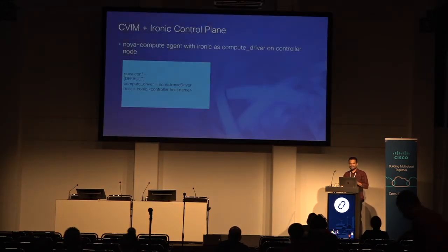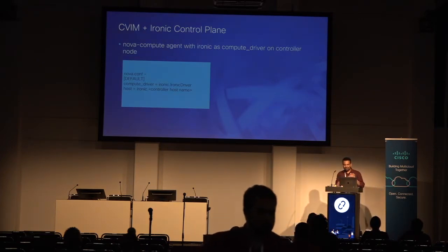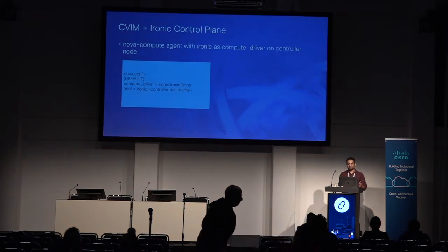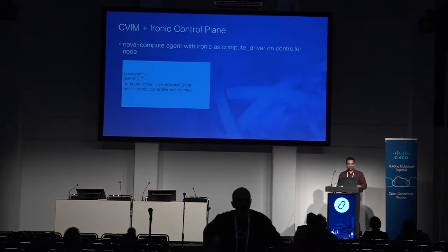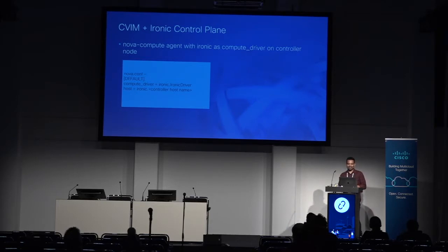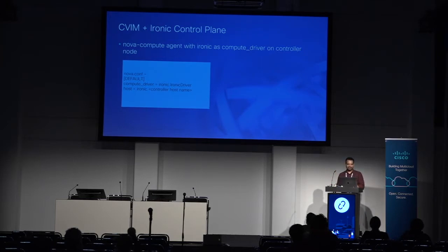On the control plane side, when you're trying to launch a bare metal instance, it is still at the end of the day a Nova instance that you're booting up. So Nova needs to know — through the compute agent — whether it's a bare metal driver or a virtual instance. As I mentioned, we have a Nova Compute agent running, and in this case the compute agent has the Ironic driver rather than the LibVirt driver. This is automated. You can run CWIM with or without Ironic. When you run it with Ironic, we automatically deploy the compute agent in the controller nodes, and the Nova config file will have the Ironic driver enabled.